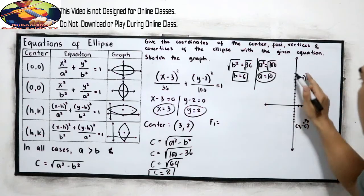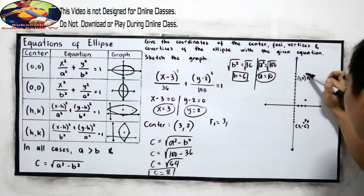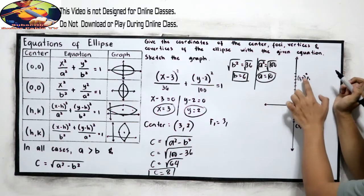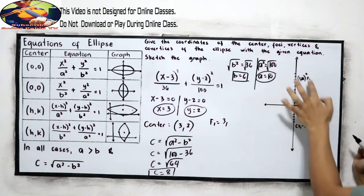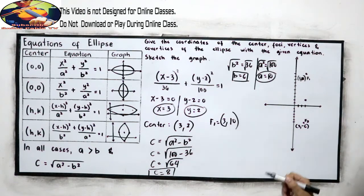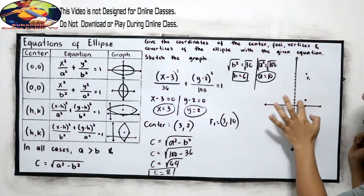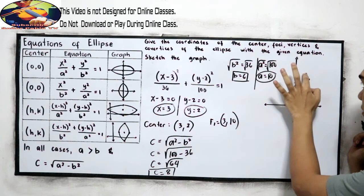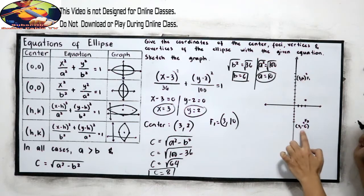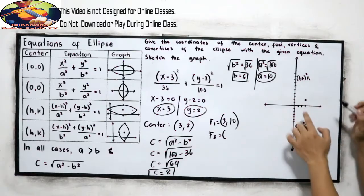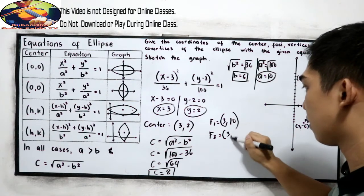Let us check our coordinates. F sub 1: 8 units up from center (3, 2), so the coordinate is (3, positive 10). And for F sub 2, going 8 units down from the center, the coordinate is (3, negative 6).